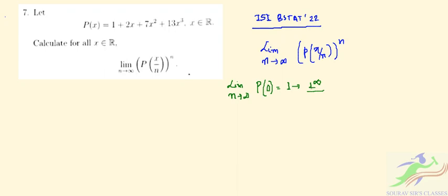1 to the power infinity can be written as e to the limit of n tends to infinity. If this is of the form of some function f_n, we can write it as n times...